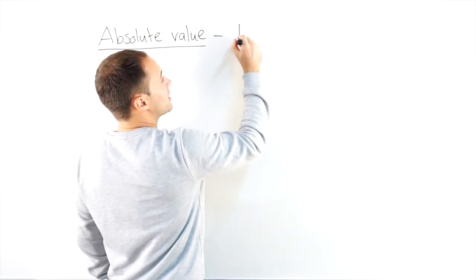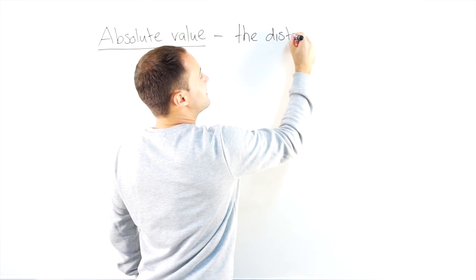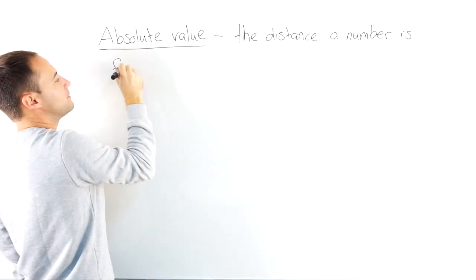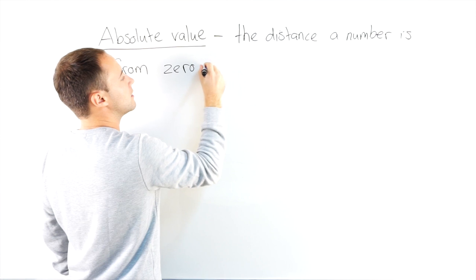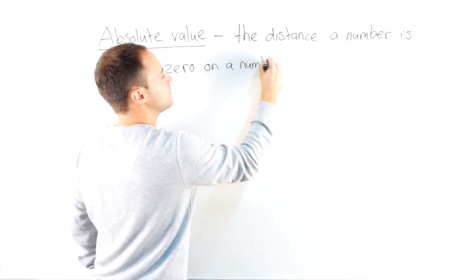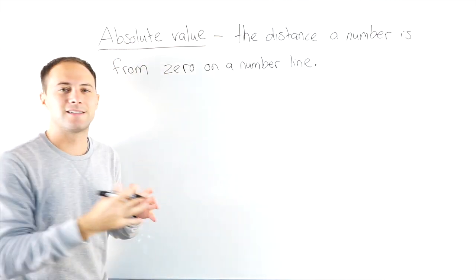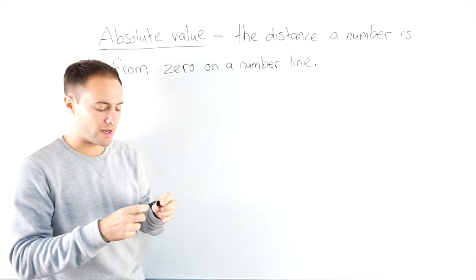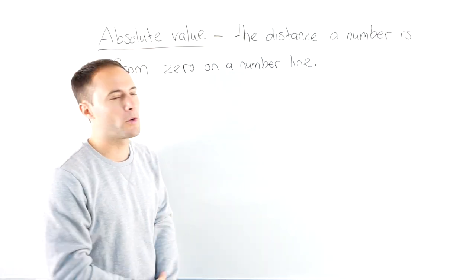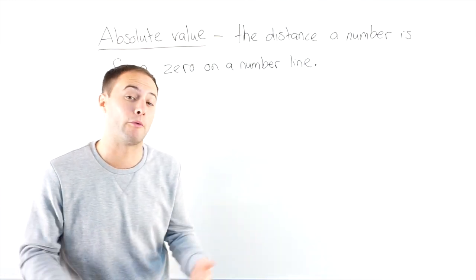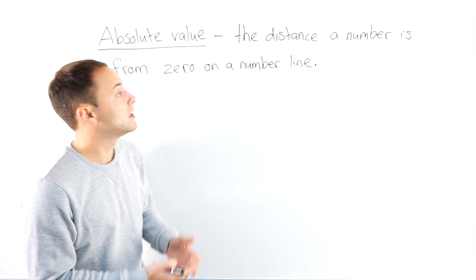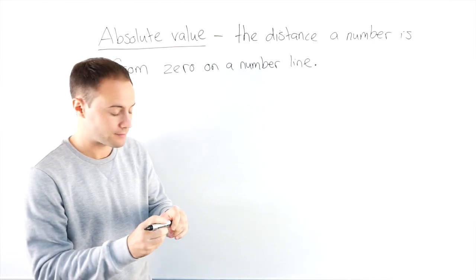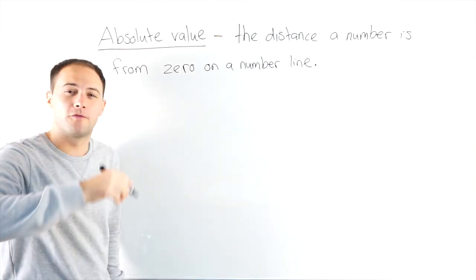Absolute value of a number is just the distance a number is from zero on a number line. Distance is really important because when you think about it, we'd never have negative distances. If someone asks you how far did you run yesterday, you're never going to say I ran negative five miles — that makes no sense. So when you take the absolute value of a number, you're going to get something that's positive. A distance is positive. The way we write absolute value is with two vertical lines.